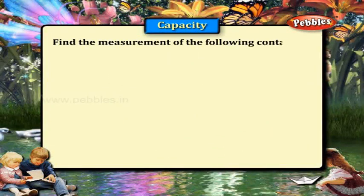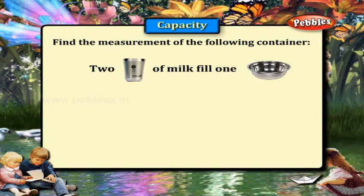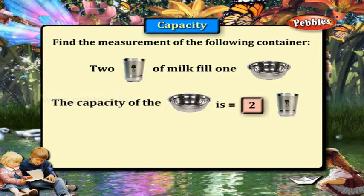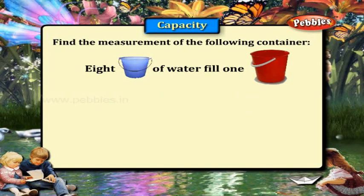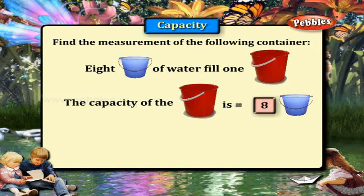Find the measurement of these containers. Two tumblers of milk fill one bowl, so the capacity of the bowl is equal to two tumblers. Eight small buckets of water fill one big bucket, so the capacity of the big bucket is eight small buckets.